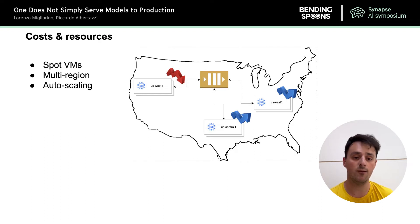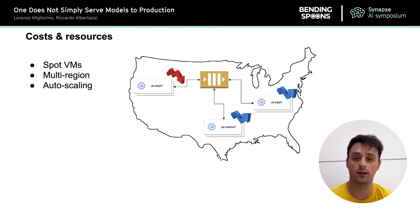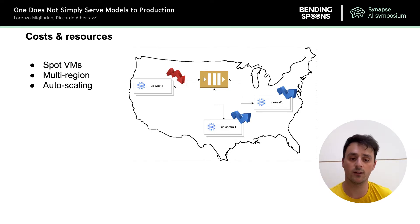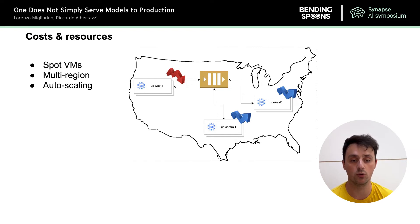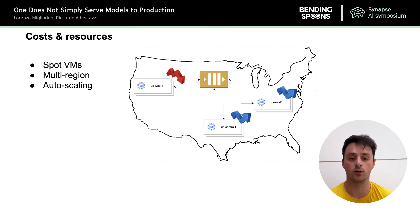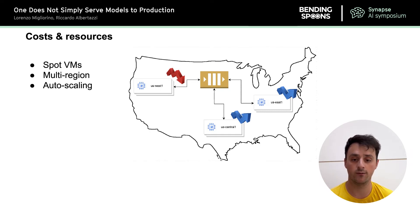The caveat is that the VM may be taken back by Google whenever there is low availability of resources in that data center and other clients are willing to pay more for those resources. This makes our infrastructure much cheaper, but also potentially much less reliable — from one moment to the other we could lose half of our processing power. Lots of requests would get queued up and users would start waiting for their predictions for a long time.